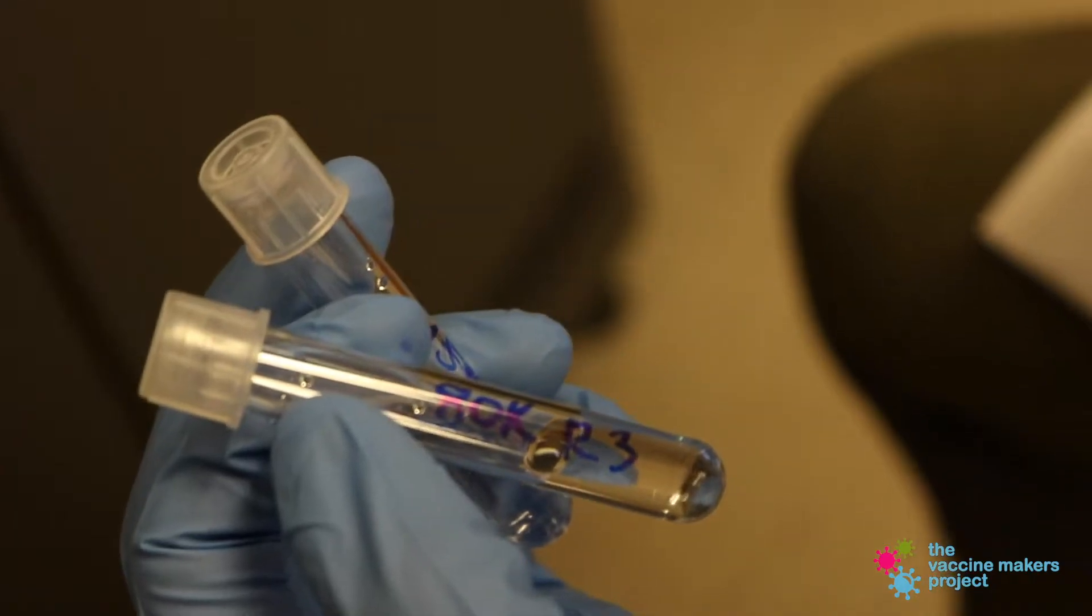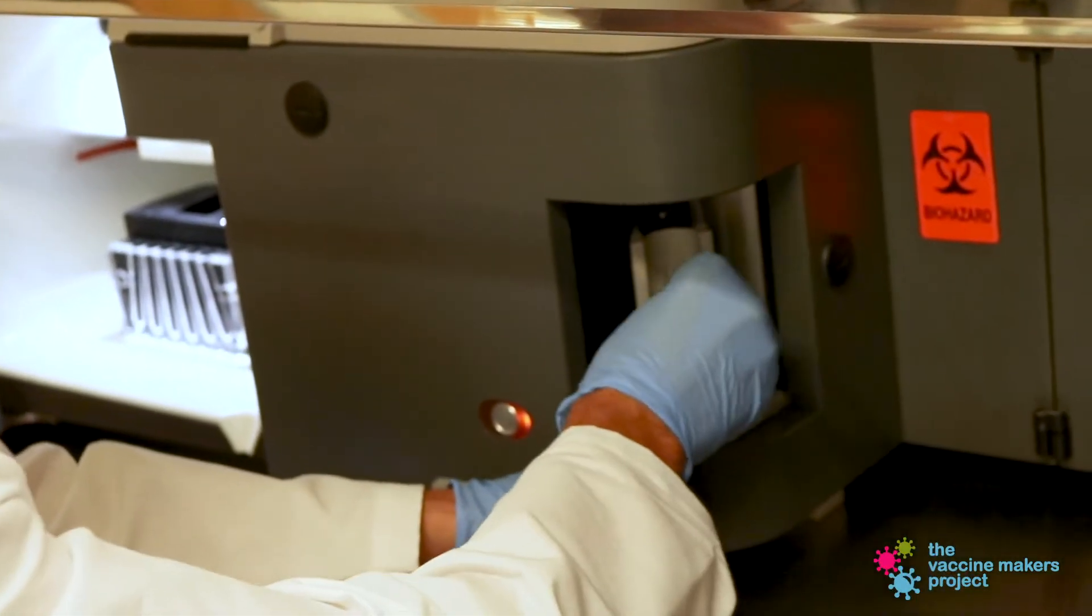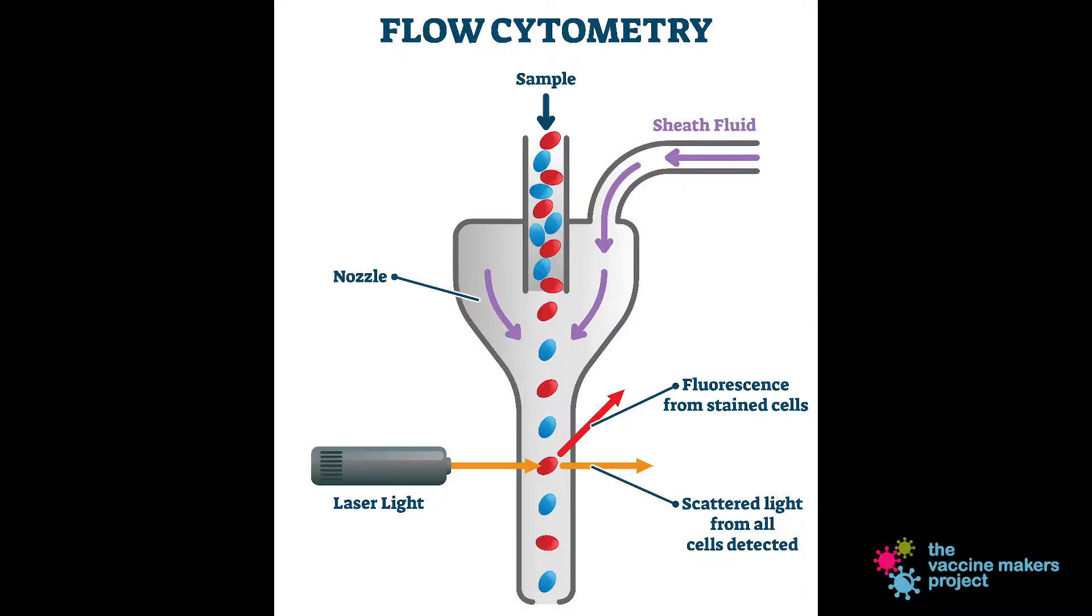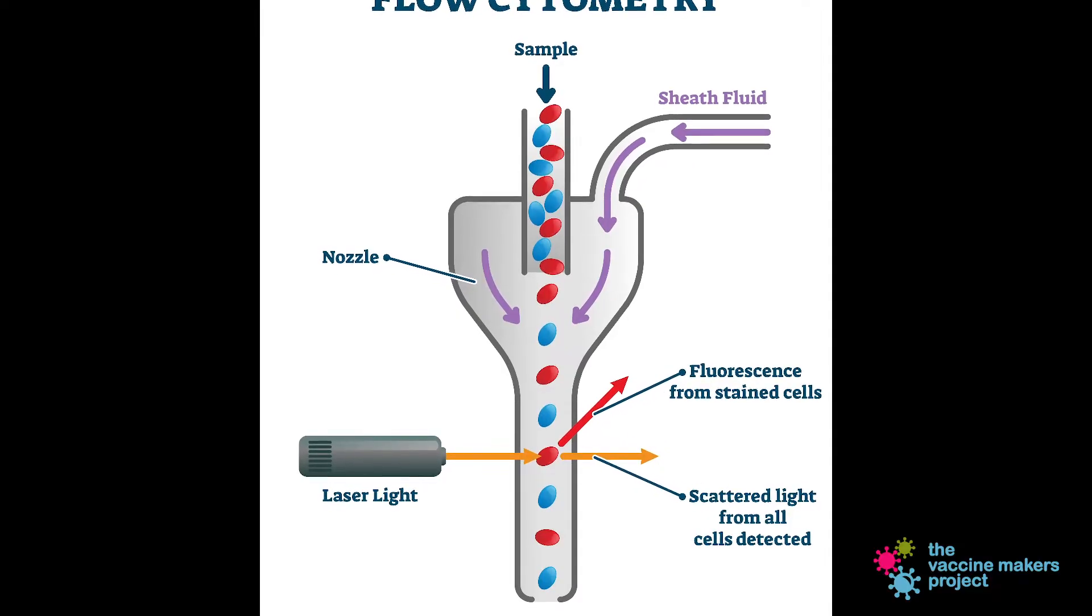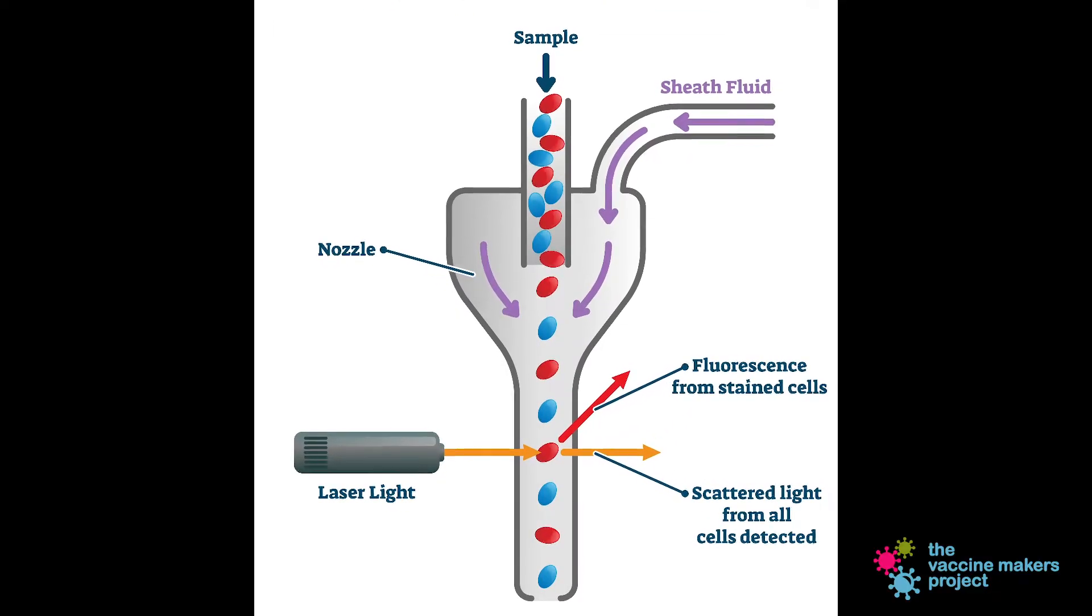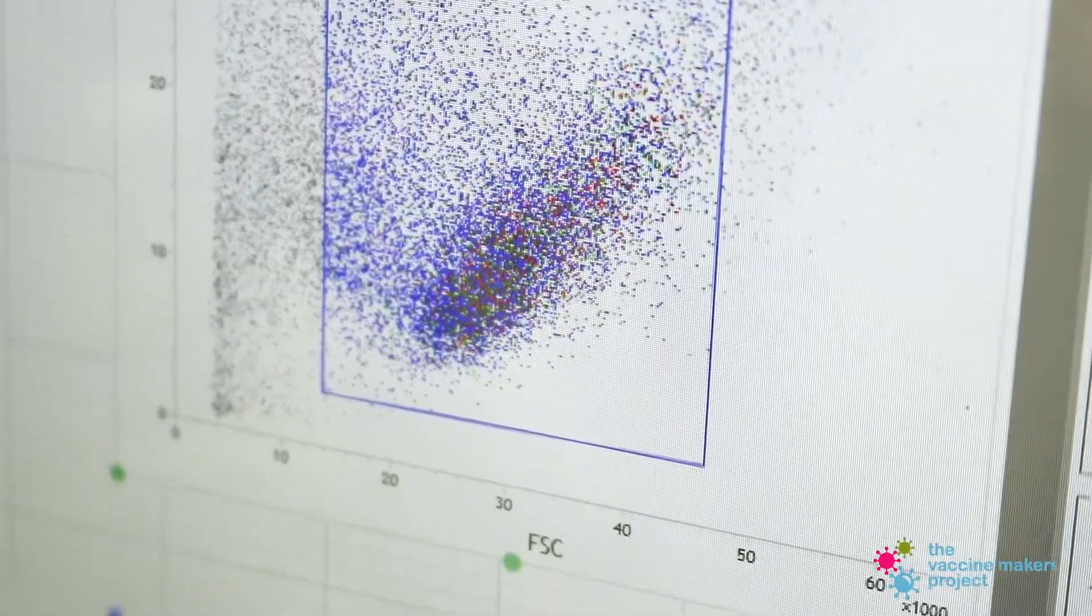To prepare cells, the cells of interest are marked with a fluorescent label. As each cell passes through the machine, it goes past a laser or several lasers. The laser excites the fluorescent tag, creates a pulse. This pulse is read by the instrumentation and then shows up as a dot on a graph.